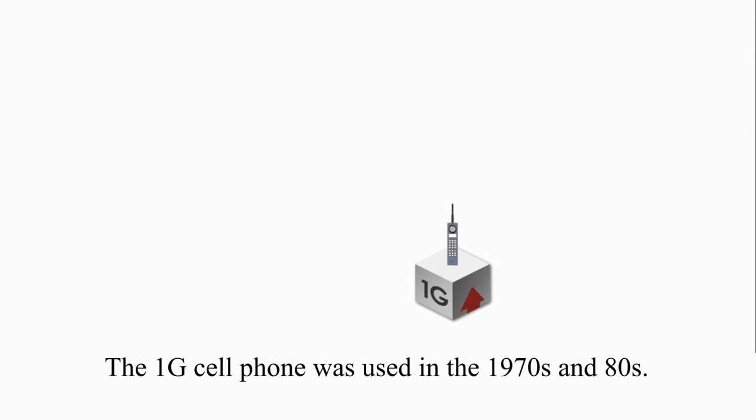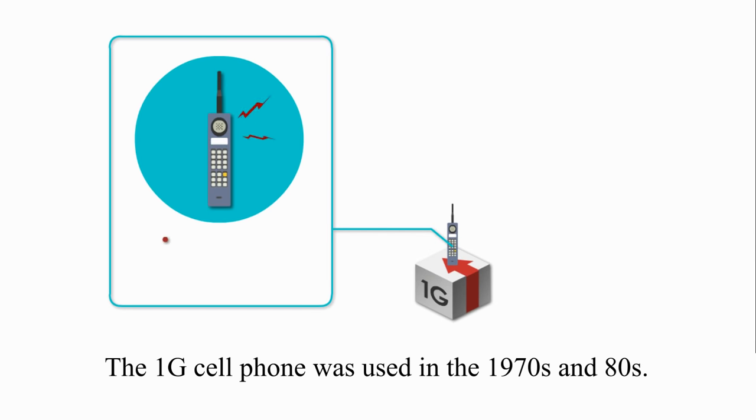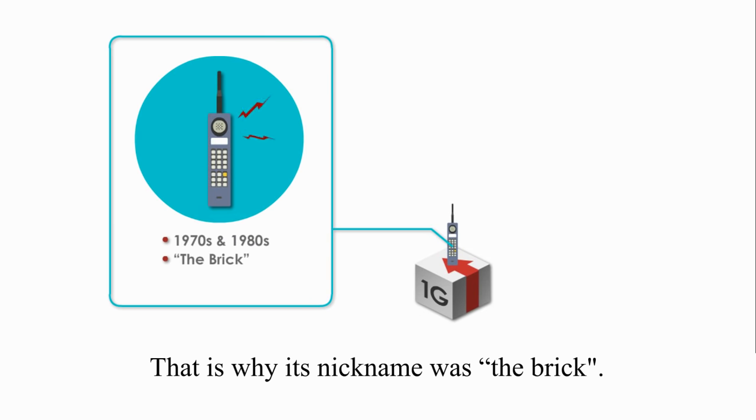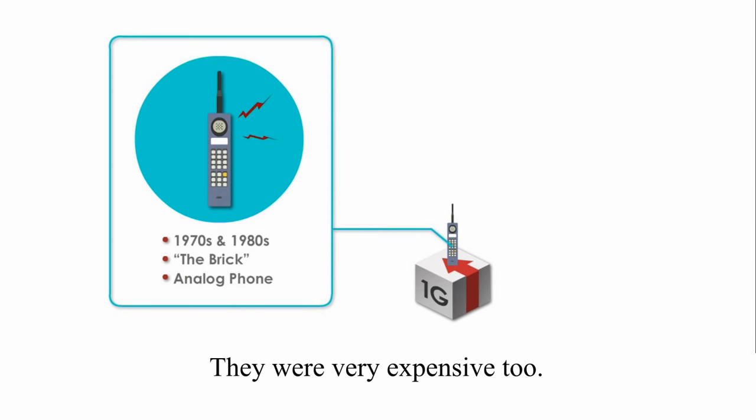The first generation cell phone was used in the 1970s and 80s. The 1G cell phone was big and heavy, that's why its nickname was The Brick. It was analog just like traditional home landline phones, and they were very expensive too.